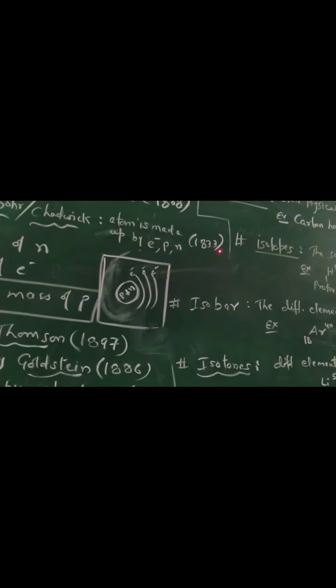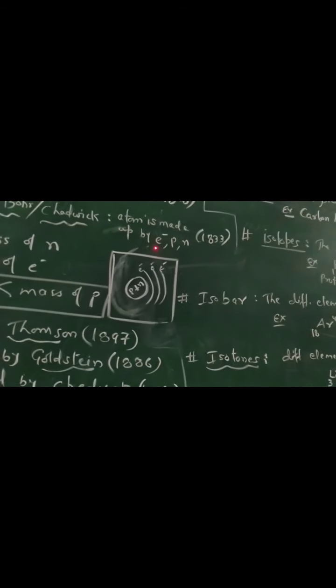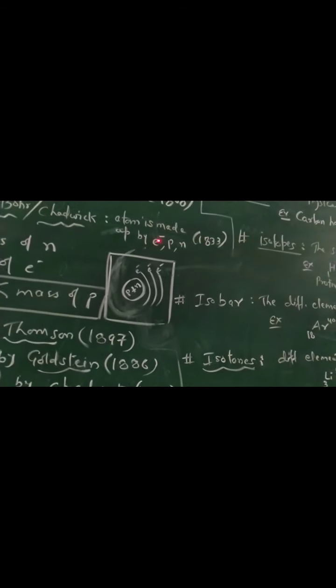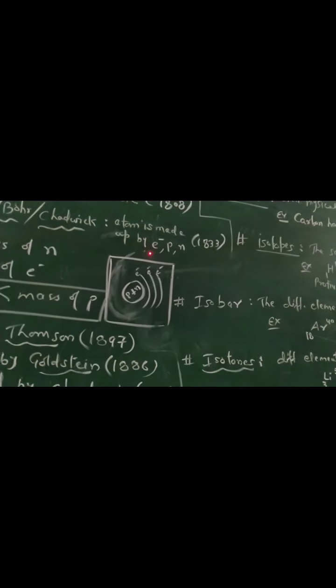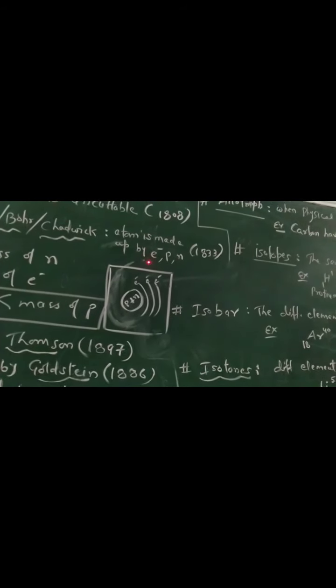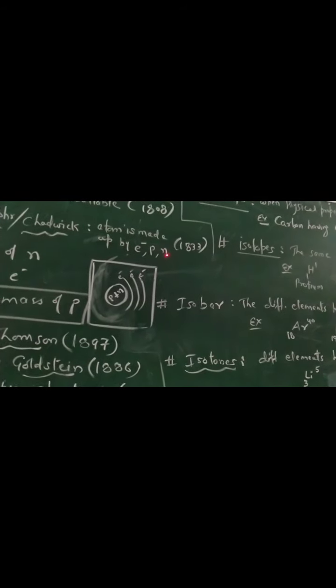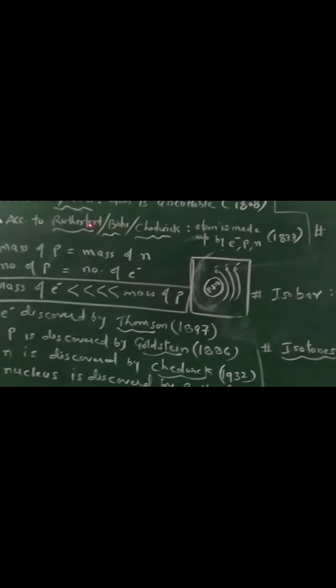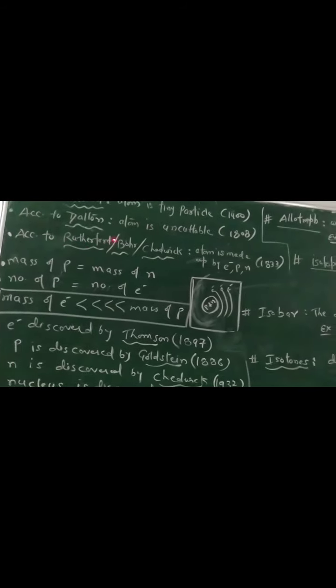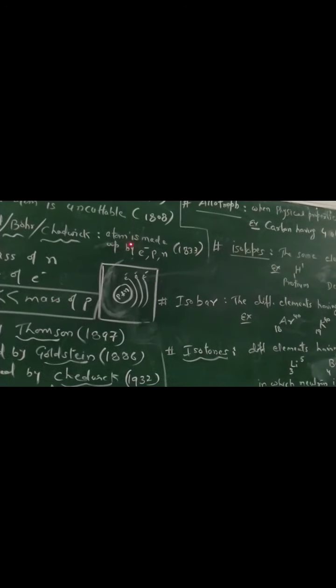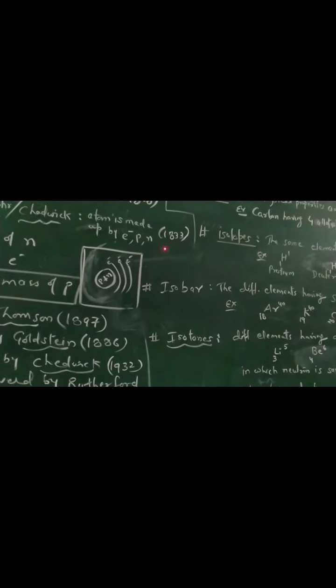This fact was discovered in 1833. Electron has symbol small e with minus charge above, because its charge is negative. Then proton has positive charge. And the third particle, neutron, has no charge. So Rutherford, Bohr, and Chadwick discovered that atom is made up of electron, proton, and neutron.